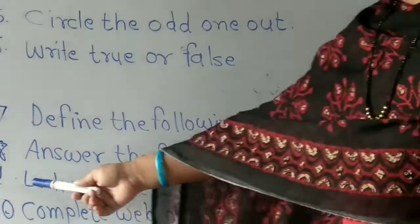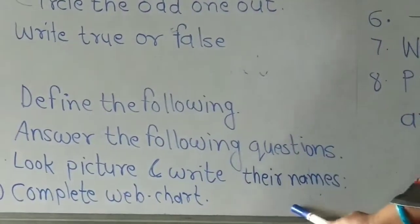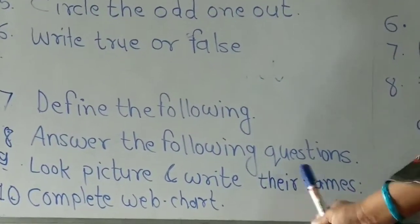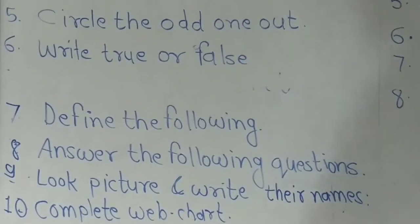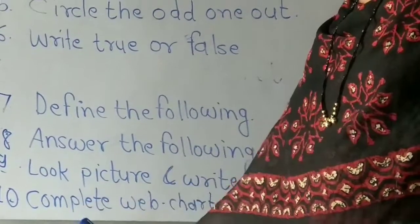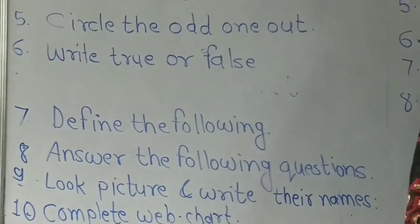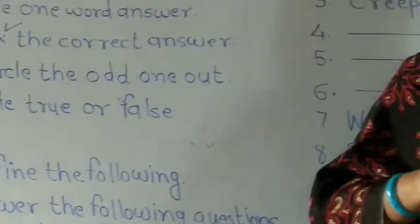Type number 9: look at the picture and write their names — look at the picture and write the names of what you see.